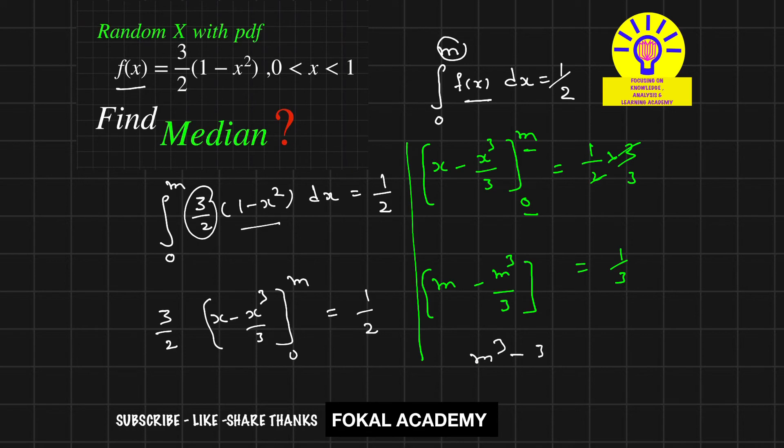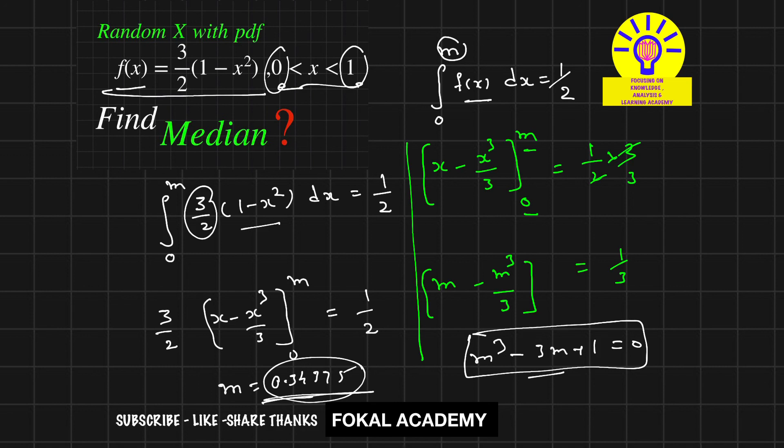This cubic equation has three roots, but only one root lies between 0 and 1, which is the median. Using a calculator, we get m equals 0.34375, which lies between 0 and 1. This is the median for the given probability density function, and this is the process for obtaining the median from the probability density function.